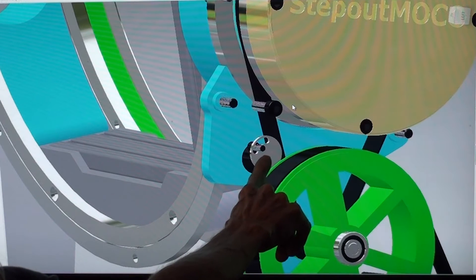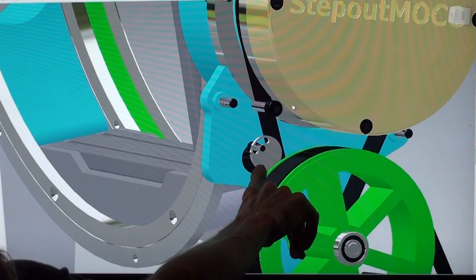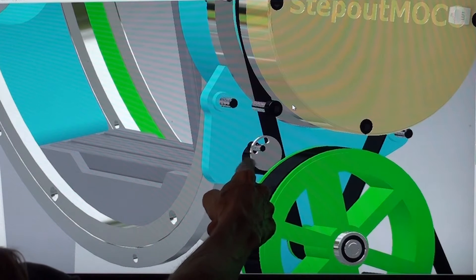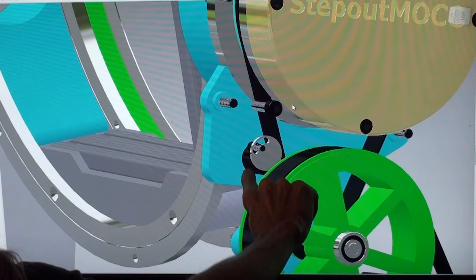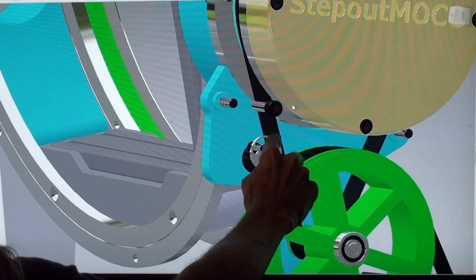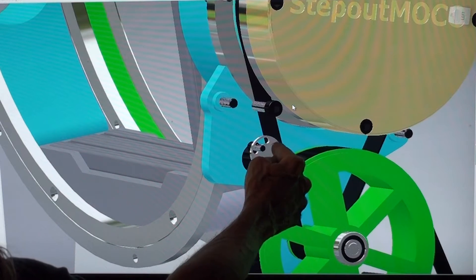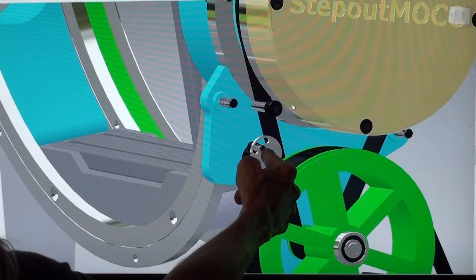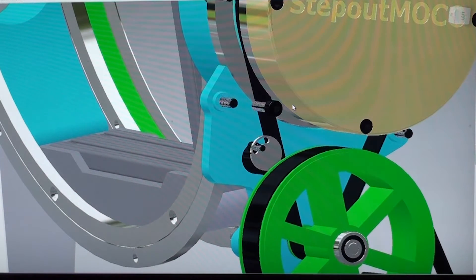This is the belt tensioner. There's a wheel on an eccentric and you move it to tension the belt. And then tighten a nut on the end of that to prevent it from moving.